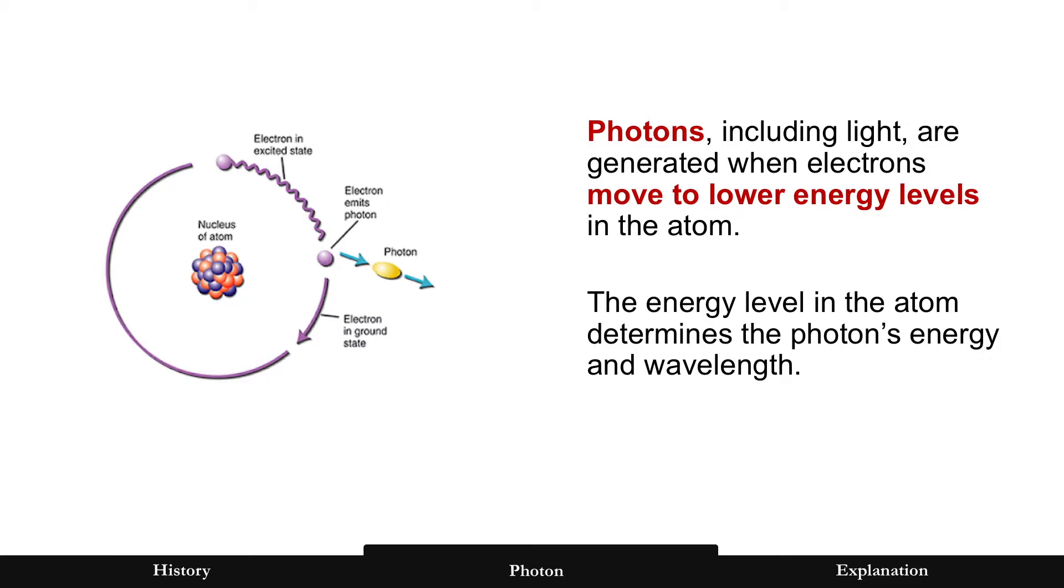This is one of the common explanations for a photon: an electron can move closer to the nucleus of an atom. It's a lower energy level, and when it does, it emits a photon. That's the common explanation.